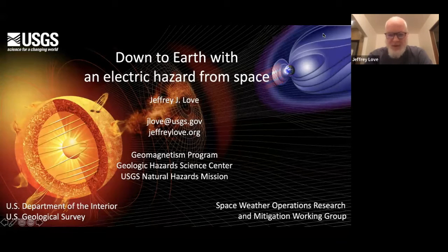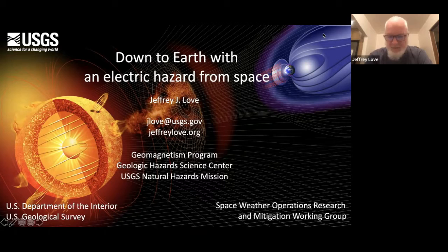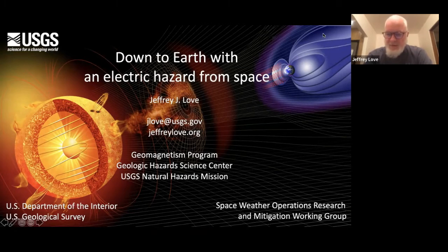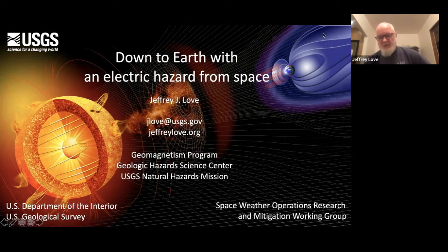The topic of my presentation today is 'Down to Earth with an Electric Hazard from Space.' There's a beautiful graphic here borrowed from NASA, illustrating in a qualitative sense the nature of the interaction that the Earth has with the sun. The Earth receives heat and light from the sun, but there's also a flow of solar wind particles that flow from the sun and affect the Earth's magnetic field.